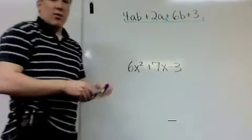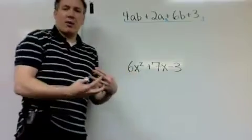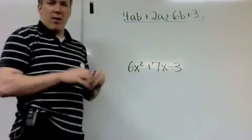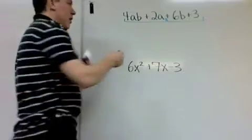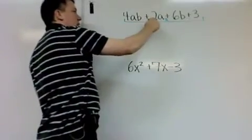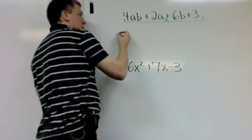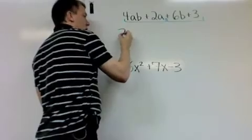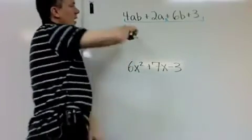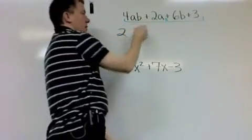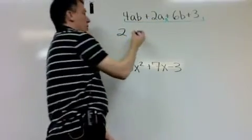And now what I'm going to do is I'm going to use the greatest common factor to factor each group. So I'm going to pretend they're two separate problems for the moment. So the greatest common factor here, well, for the numbers is 2. And for the letters, well, they have an A in common, but they don't have a B in common, so I'm only going to take the A.